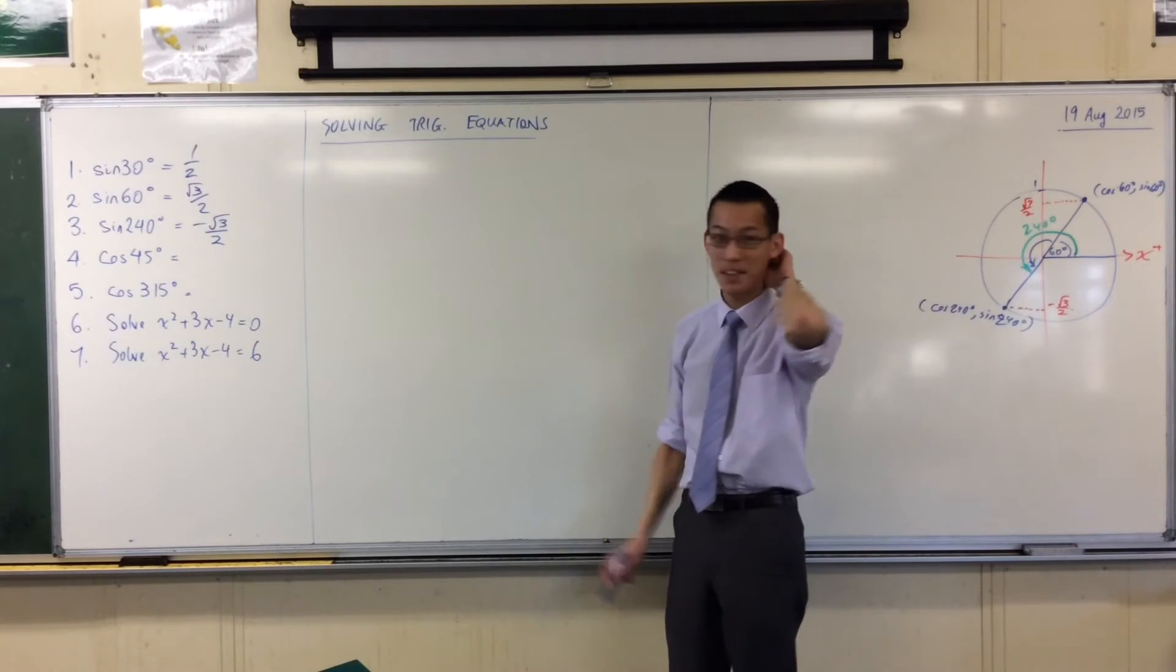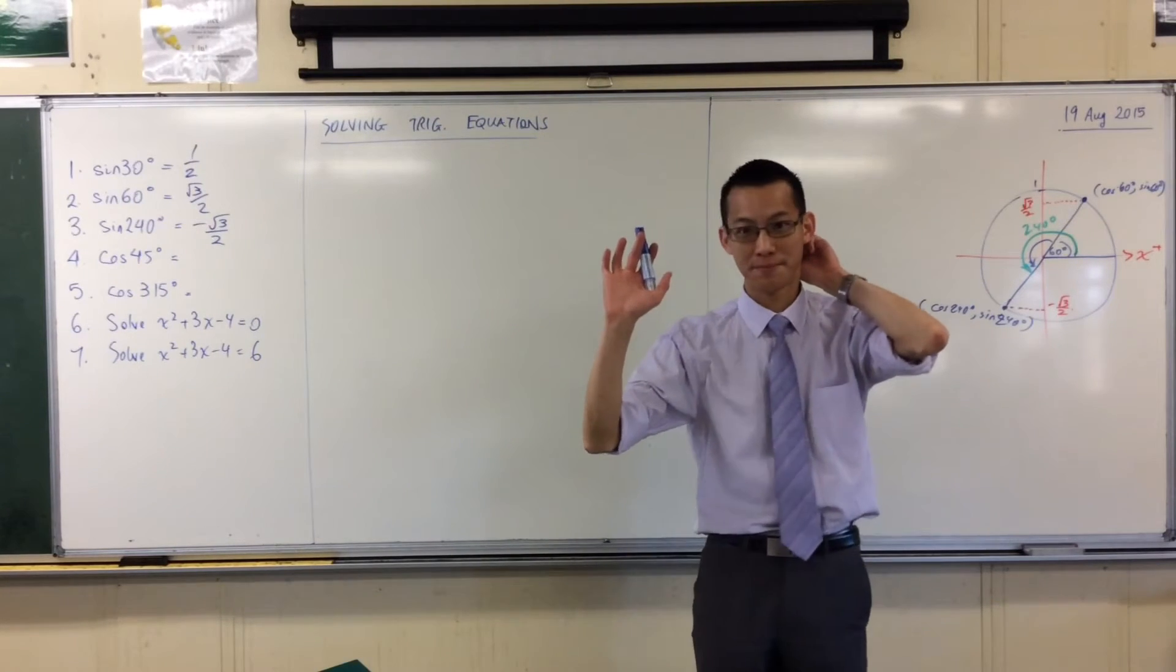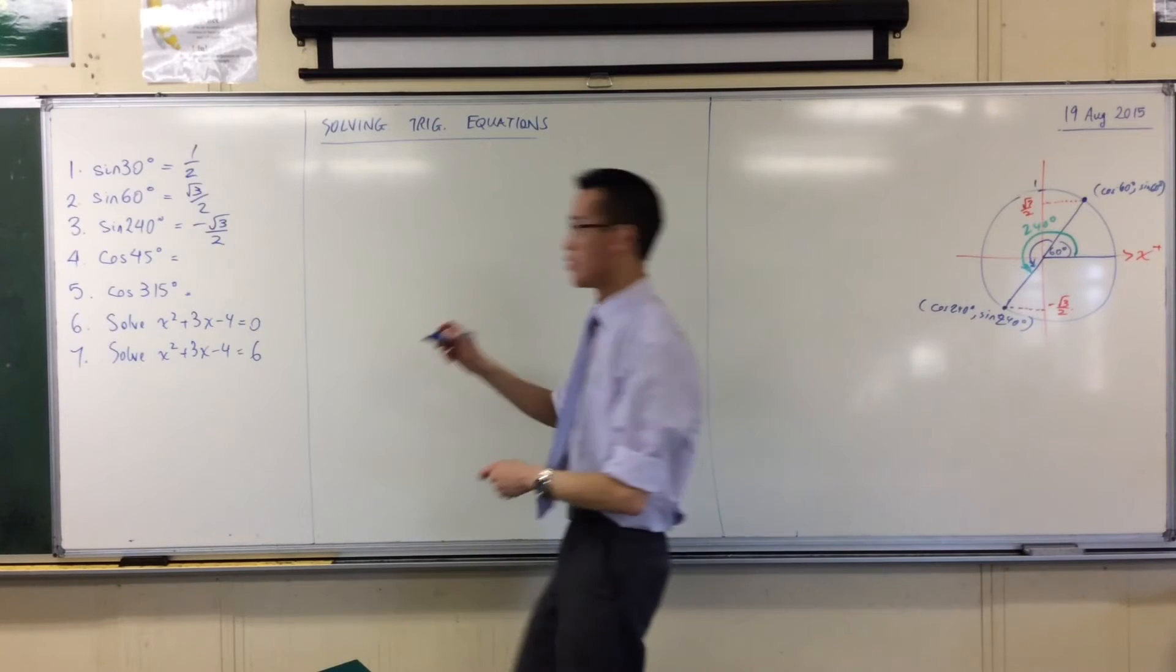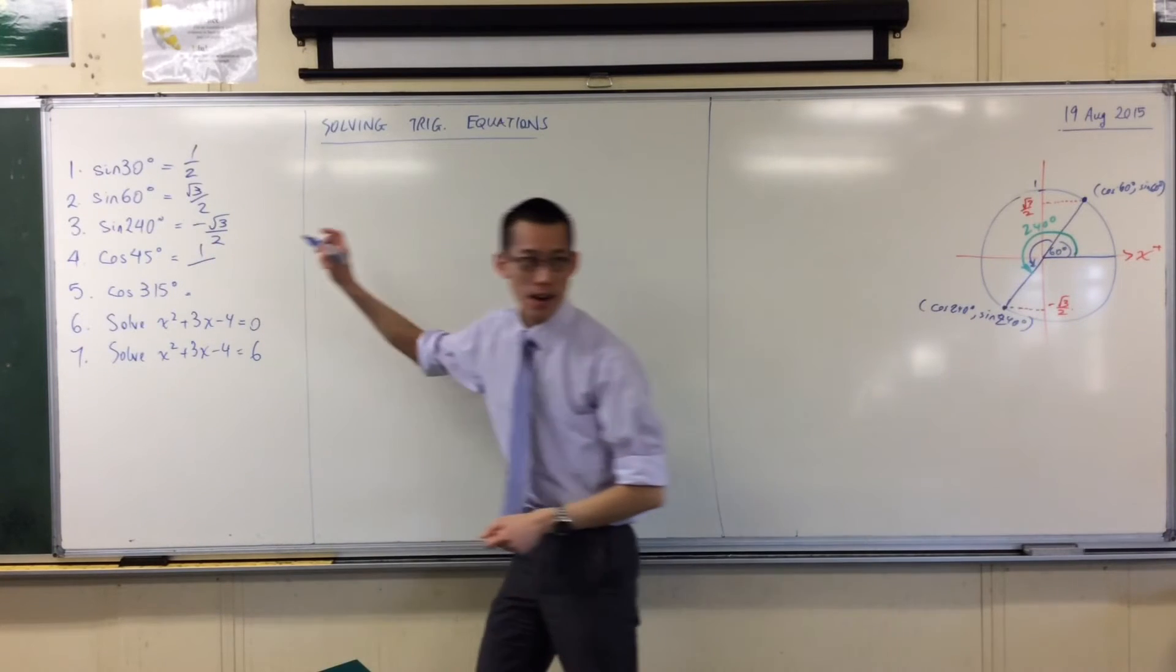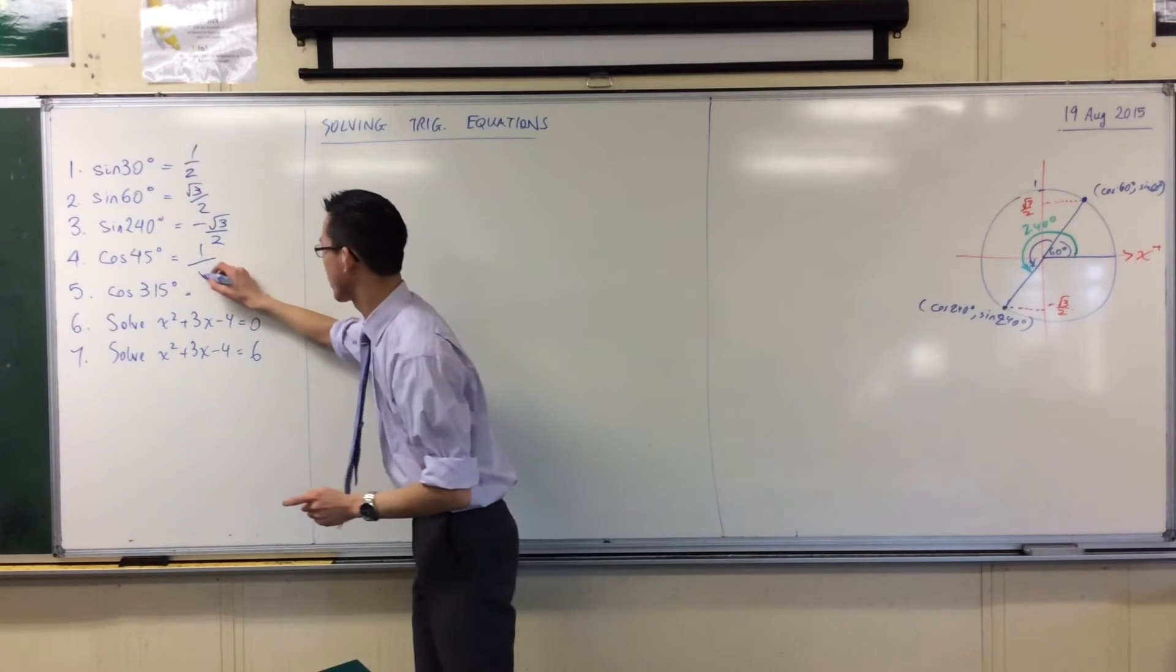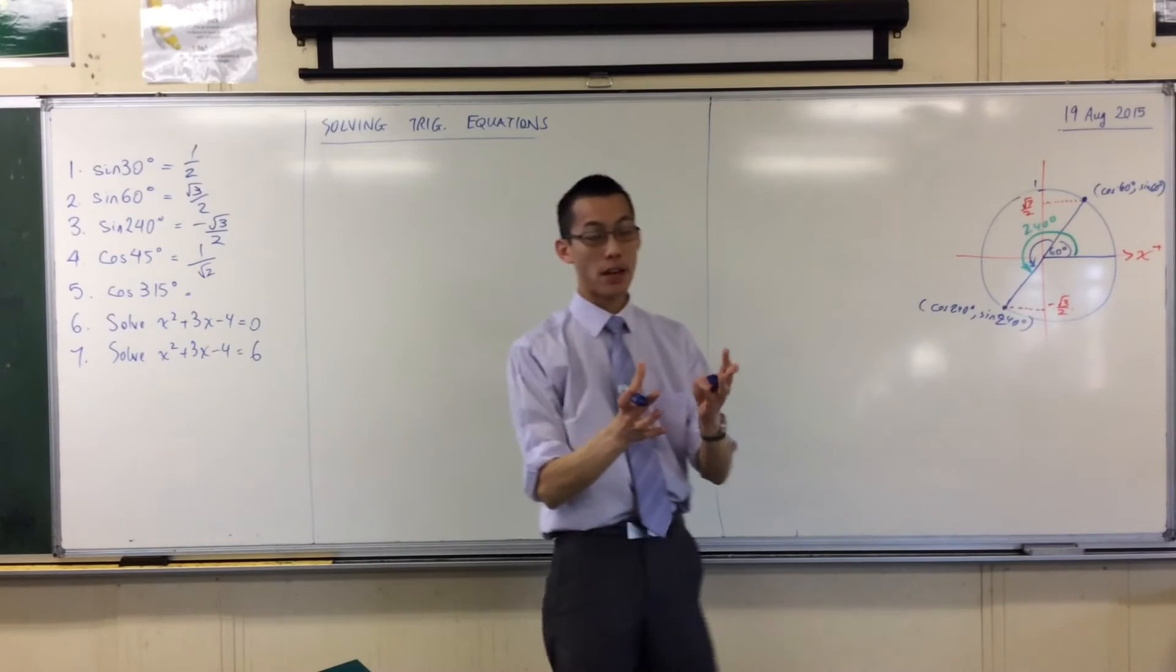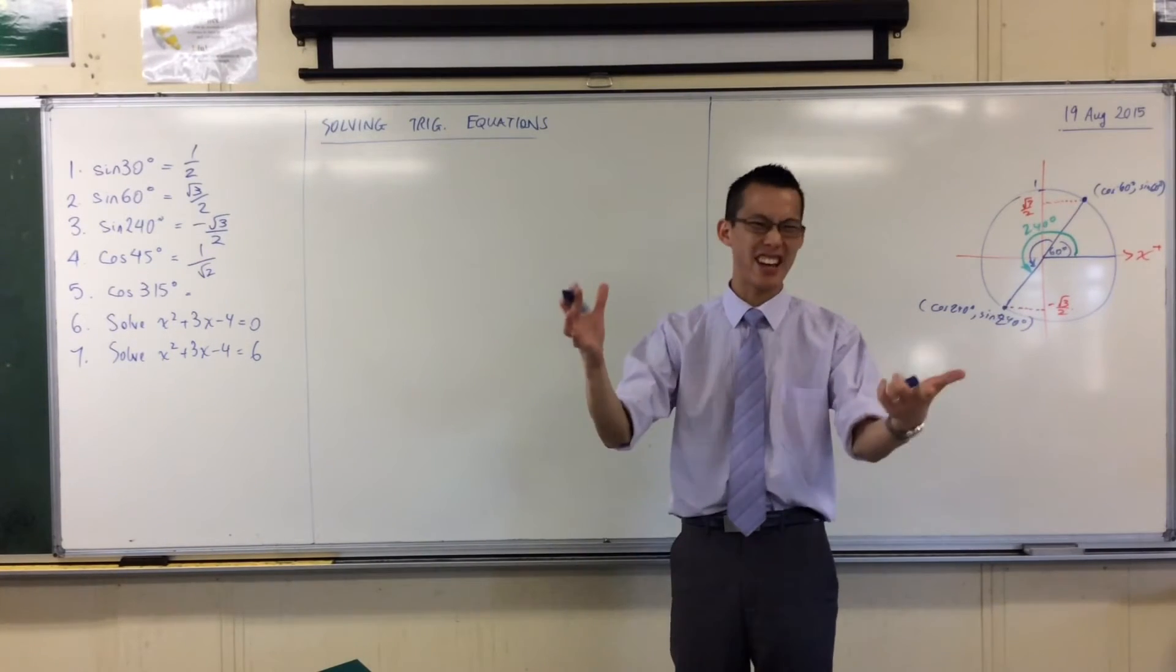Cos 45. Who can give me cos 45? Somebody hasn't said anything yet. 1 over 2. Oh, very close. 1 over root 2. It's root 2, isn't it? It's so very close. And the way you can confirm for yourself, because that's a bit tricky, is chuck it in your calculator.